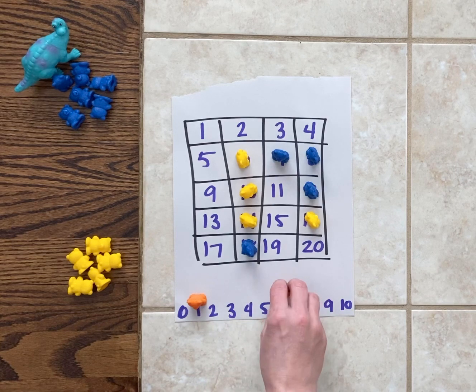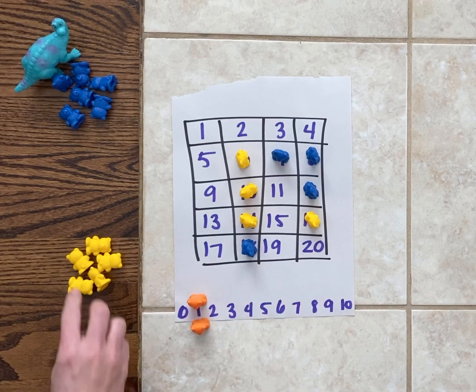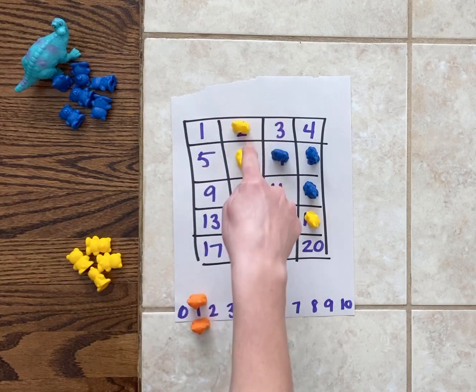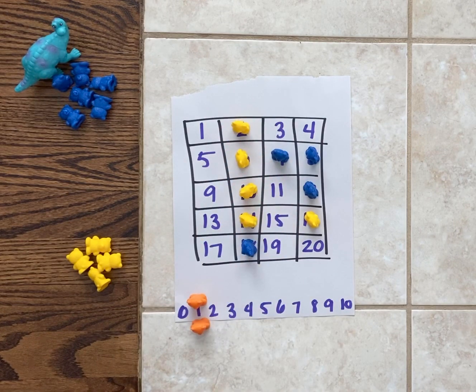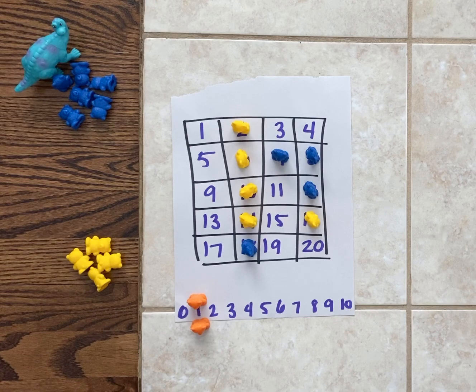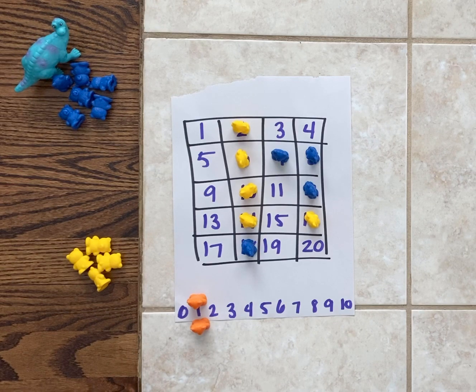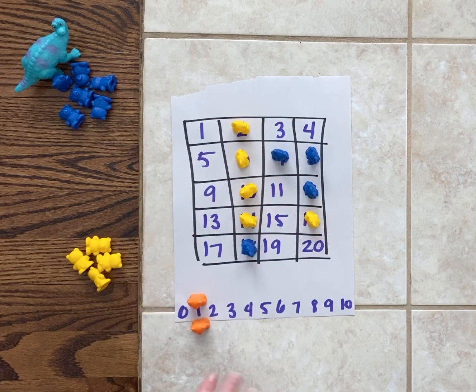I am going to do 1 plus 1 is 2 so that I can take this 2 and have 4 in a row. That means I just won this game. Dinosaur and I can clear our boards and play again.